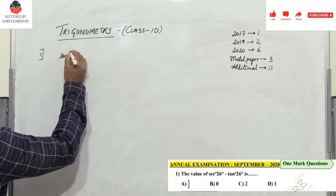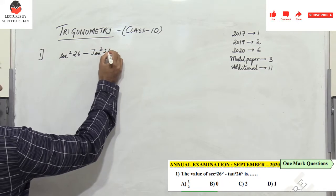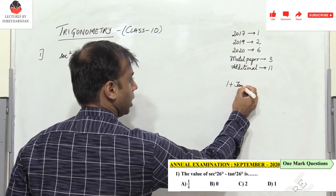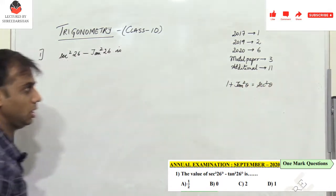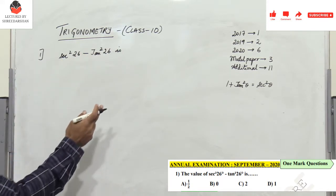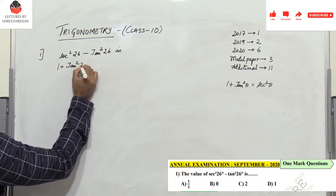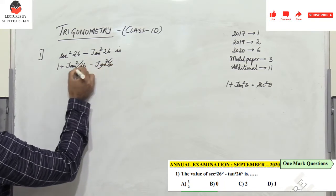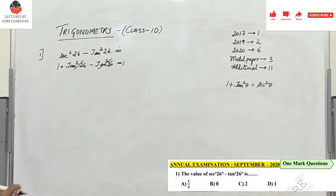Problem 1 is from the 2020 exam — a multiple choice question: sec²26 − tan²26. We know that 1 + tan²θ = sec²θ, so replacing sec²26 with 1 + tan²26, we get 1 + tan²26 − tan²26. The tan²26 terms cancel, so the answer is 1. Among the four options, the correct answer is D.